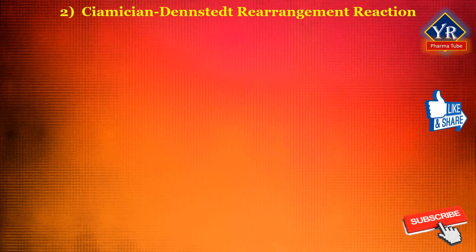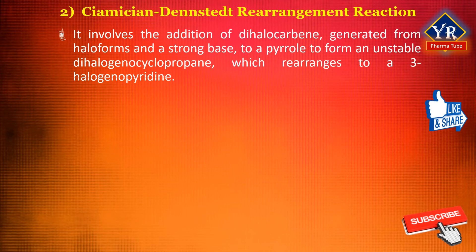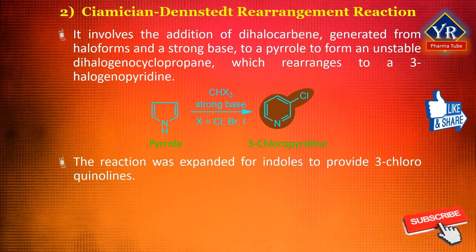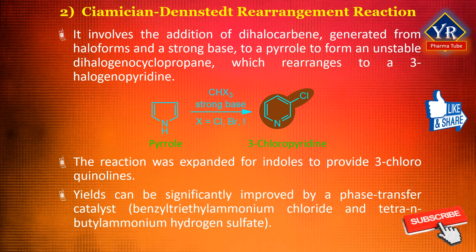The next reaction is the Ciamician-Dennstedt rearrangement. This reaction involves the addition of an intermediate dihalocarbene, generated from haloforms and a strong base, to a pyrrole to form an unstable dihalogenocyclopropane, which rearranges to a 3-halogenopyridine such as 3-chloropyridine. The reaction was expanded for indoles to provide 3-chloroquinolines. The yield was only 20%, but can be significantly improved by using a phase transfer catalyst such as benzyltriethylammonium chloride and tetra-n-butyl ammonium hydrogen sulfate.